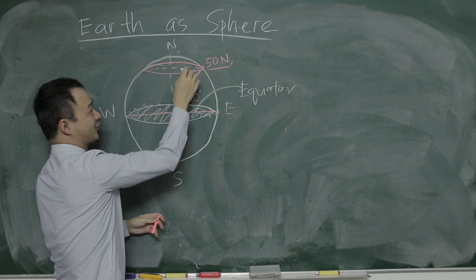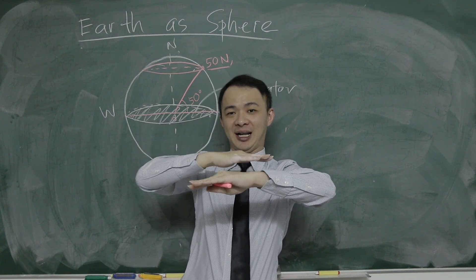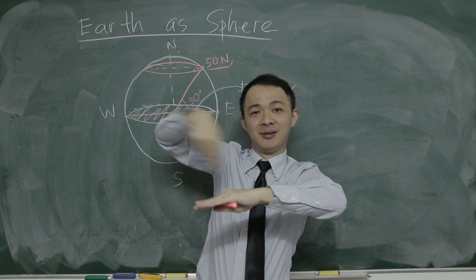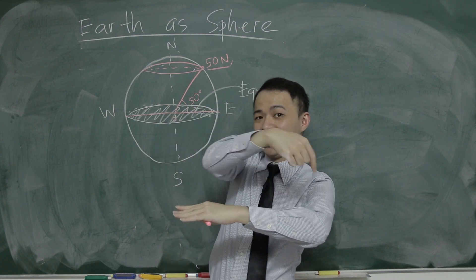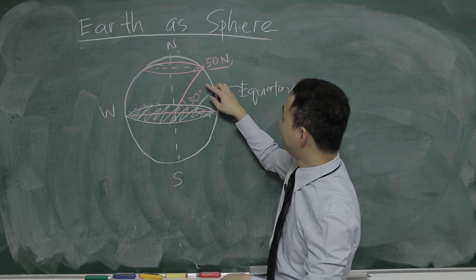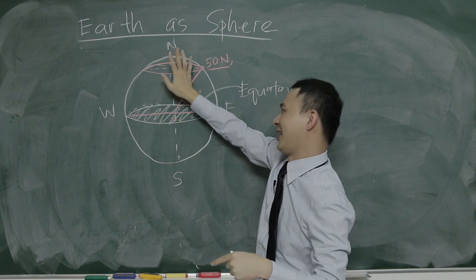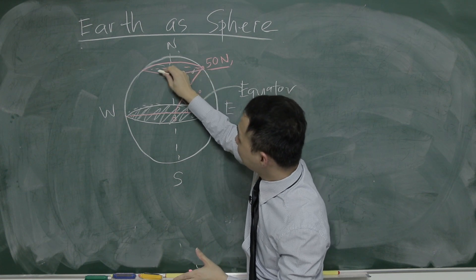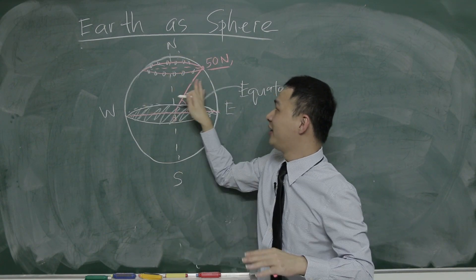50 North is one whole plane — it's not a single point. Basically, all the coordinates surrounded by this plane on the Earth are called 50 North. You can imagine the Earth has 90 planes going north: one north, two north, three north, up to 90 North. Among that circular plane, every coordinate is, say, one north — just the longitude is changing. So when I say 50 North, the whole plane is 50 North.